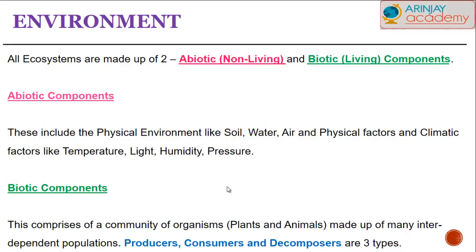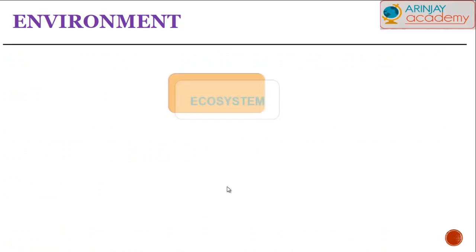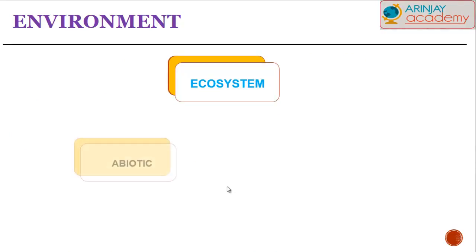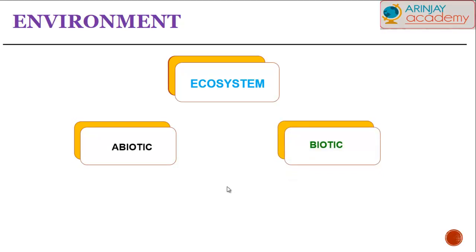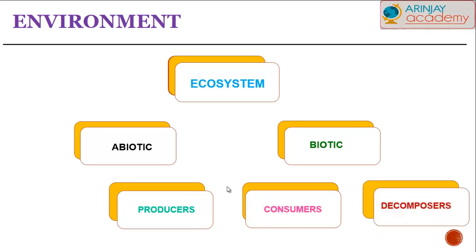The biotic component, on the other hand, is a community of organisms like plants and animals that make up interdependent populations. The biotic component comprises of producers, consumers, and decomposers, and are of three different types. Have a look at the diagram of the ecosystem showing the abiotic factor and the biotic, which comprises of producers, consumers, and decomposers.